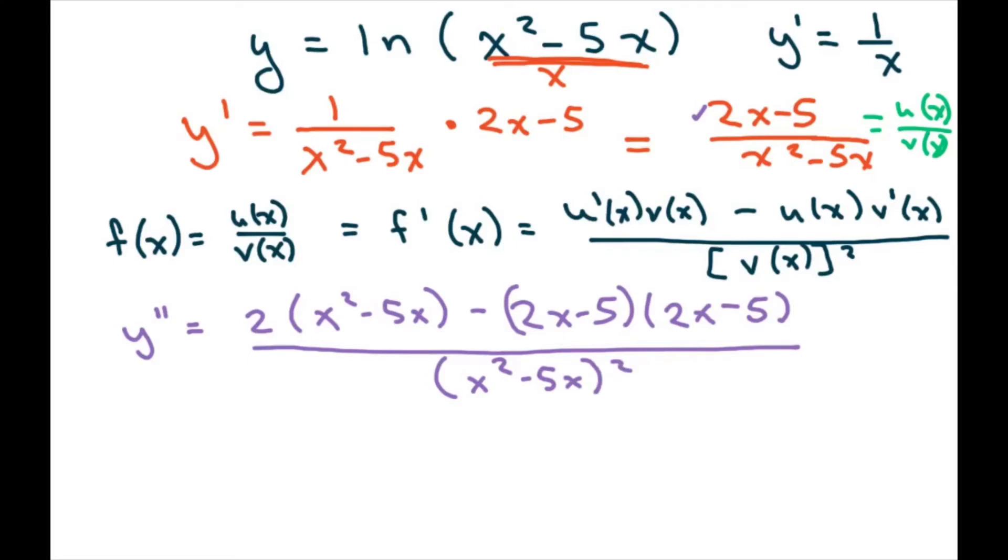Now we're going to simplify all this. I'll do it on the next page, so make sure you write this down. I'm going to distribute here and treat this as a minus b squared, because they're just two of the same ones. So what you get is y double prime equals 2x squared minus 10x minus 4x squared minus 20x plus 10.